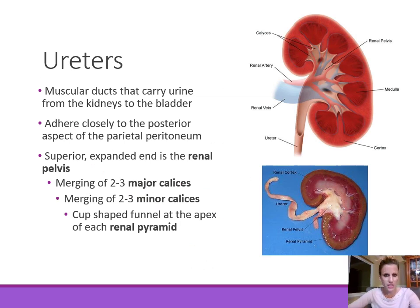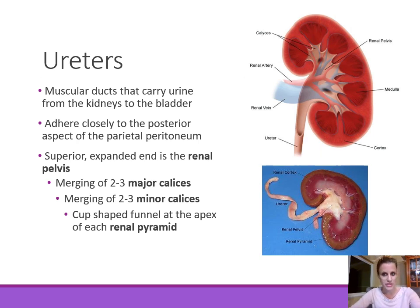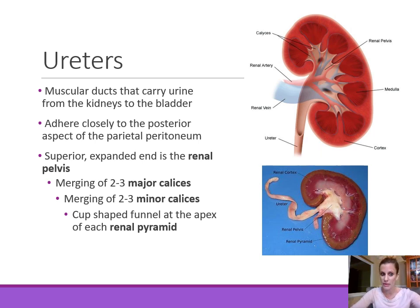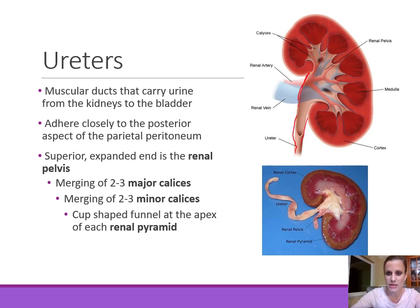The ureters are the muscular ducts or tubes that carry urine from the kidneys down to the bladder — a left ureter and a right ureter. The abdominal part of the ureter is also located in the retroperitoneal space, adhering closely to the posterior aspect of the parietal peritoneum as they descend toward the pelvis. The superiormost portion of the ureter is referred to as the renal pelvis — a large funnel-shaped structure at the proximal region of the ureter.